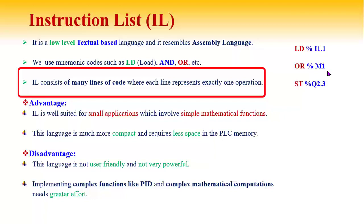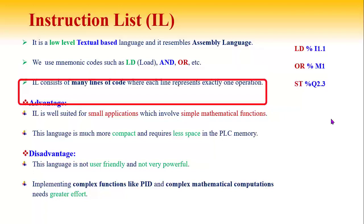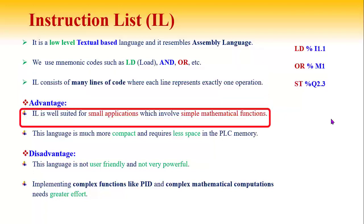For example, 'OR %M0.1' is used for an OR operation with input I0.1. Instruction List is well suited for small applications only, which involve simple mathematical functions.